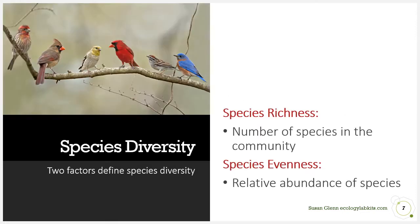Like this picture of diverse songbirds sitting on a branch, very evenly distributed among different species. Species richness is how many different species — one, two, three, four, five, six species on this branch. Species evenness is the relative abundance. These are very even — there's one of each. These two factors, how evenly distributed the numbers are and how many different species there are, together define species diversity: richness and evenness are both components.